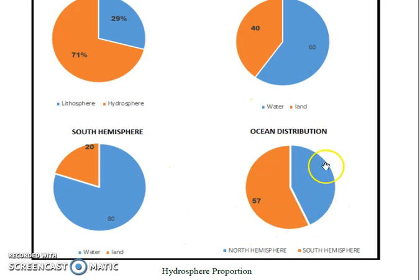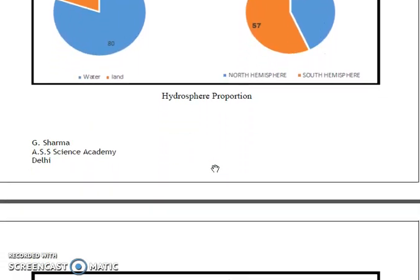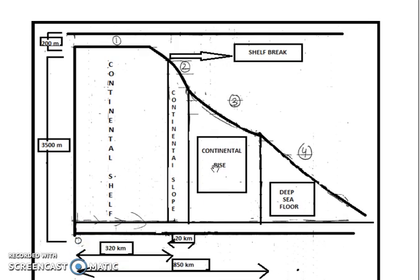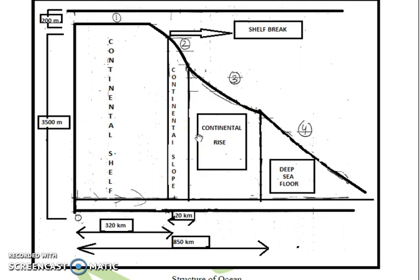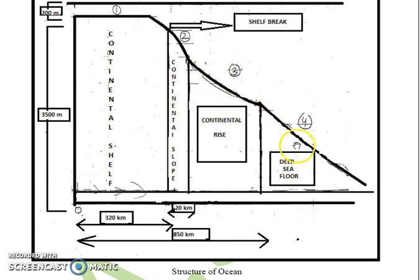Now we will be talking about the structure of the ocean. As shown in the diagram, we have divided the ocean into four parts: first, continental shelf; second, continental slope; third, continental rise; and fourth, deep sea floor.